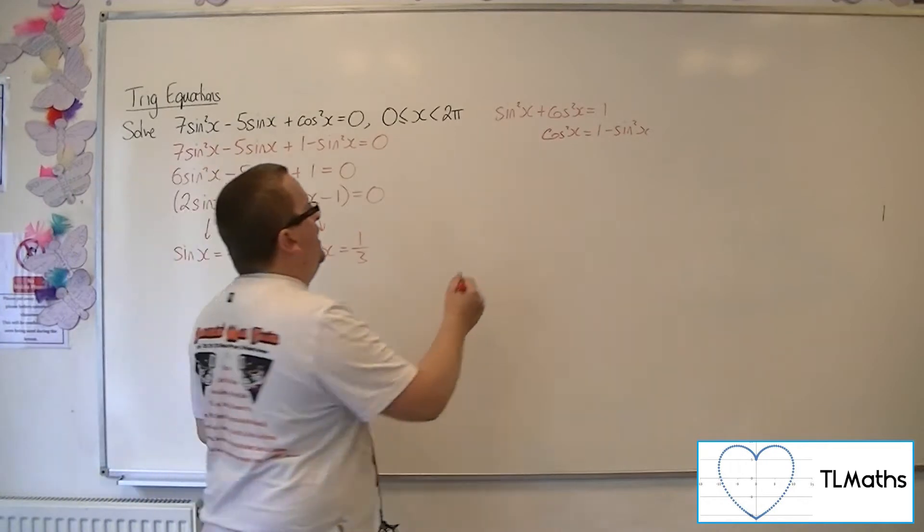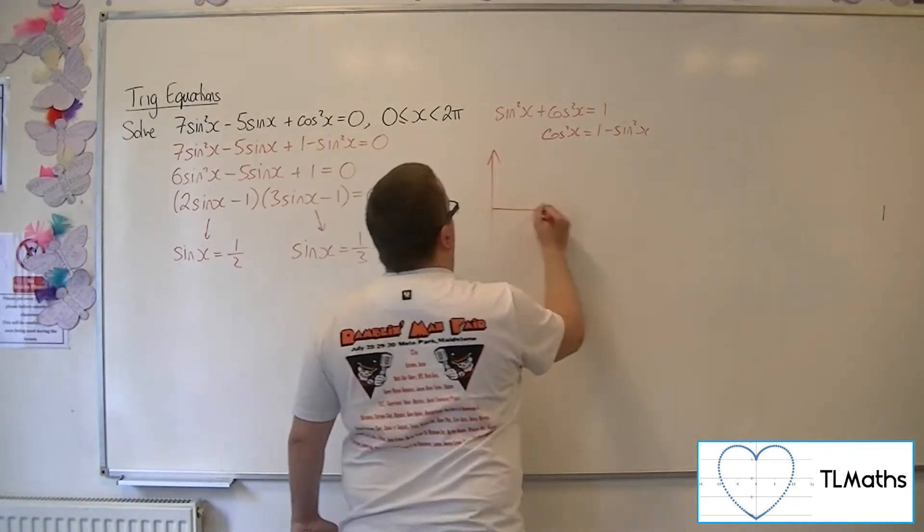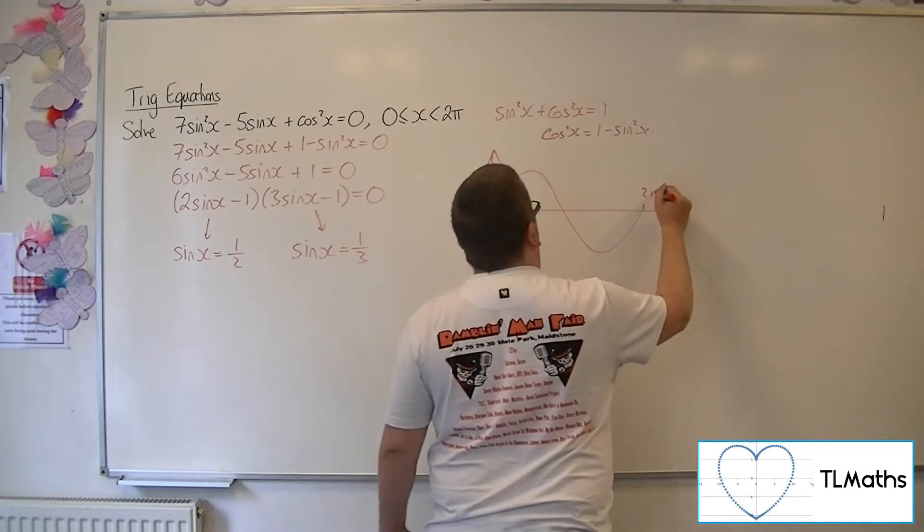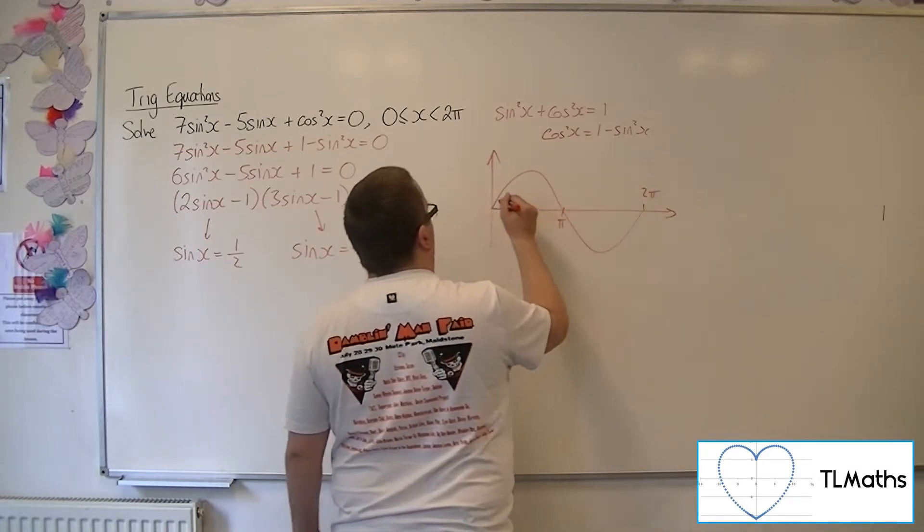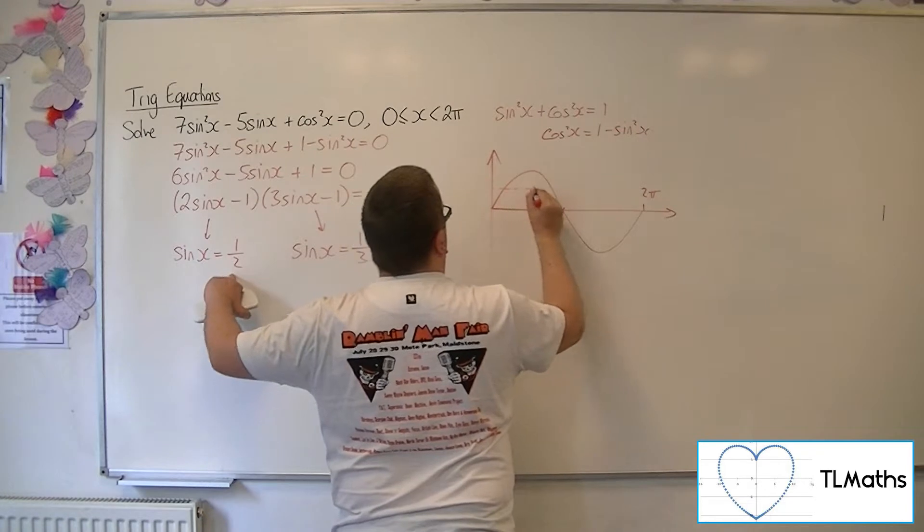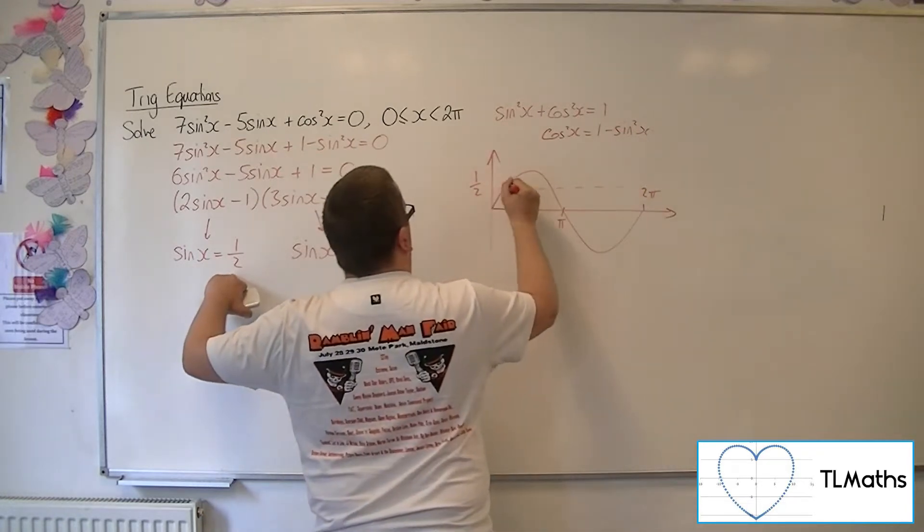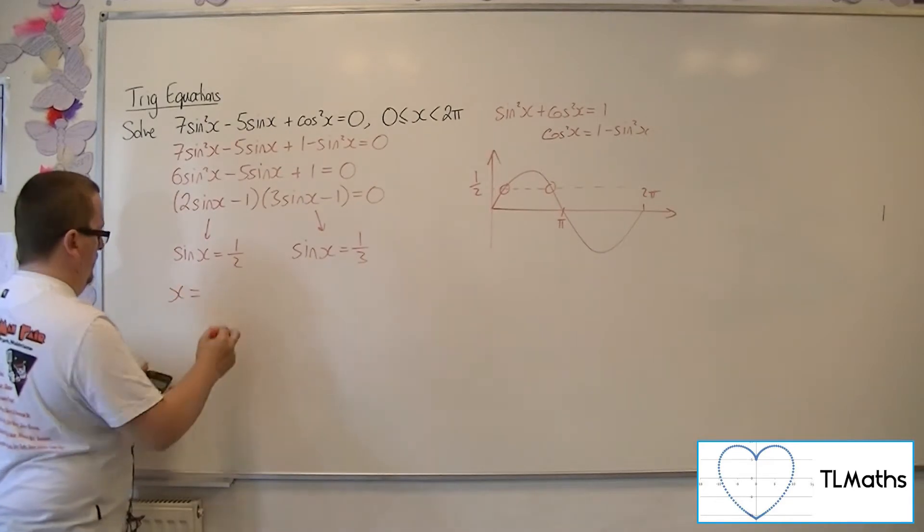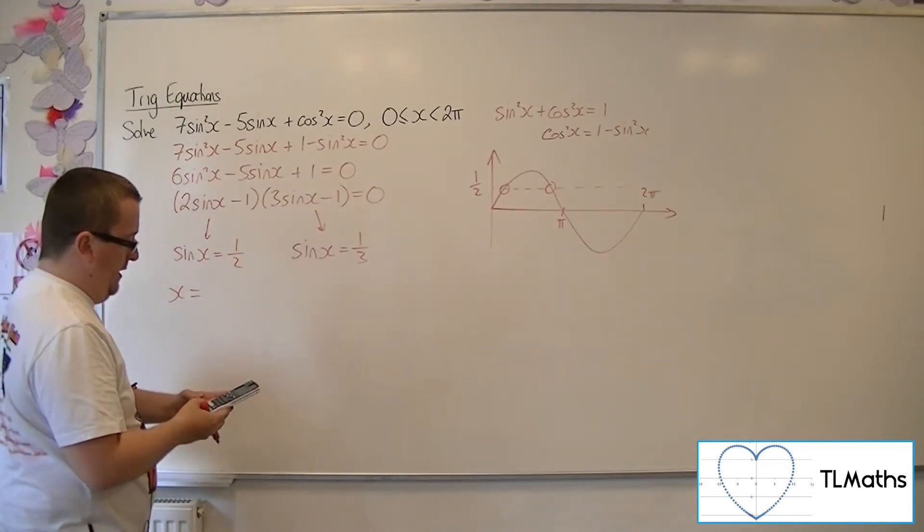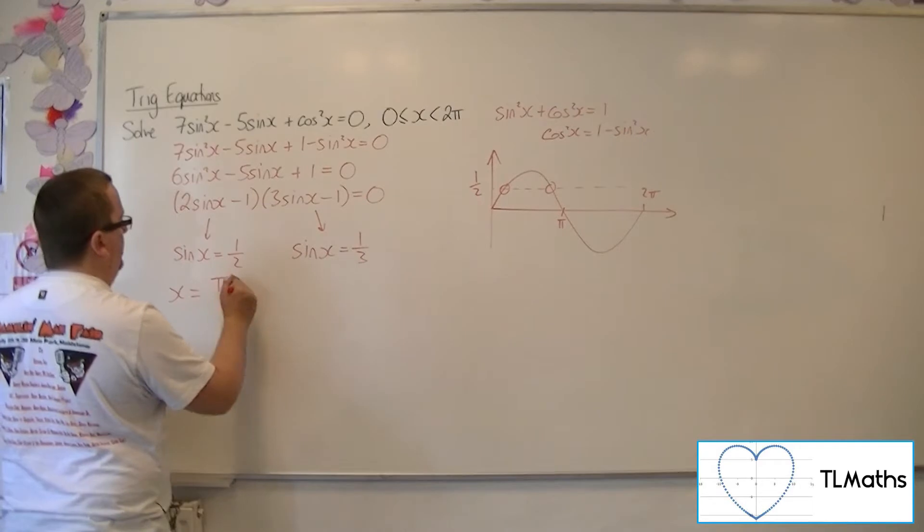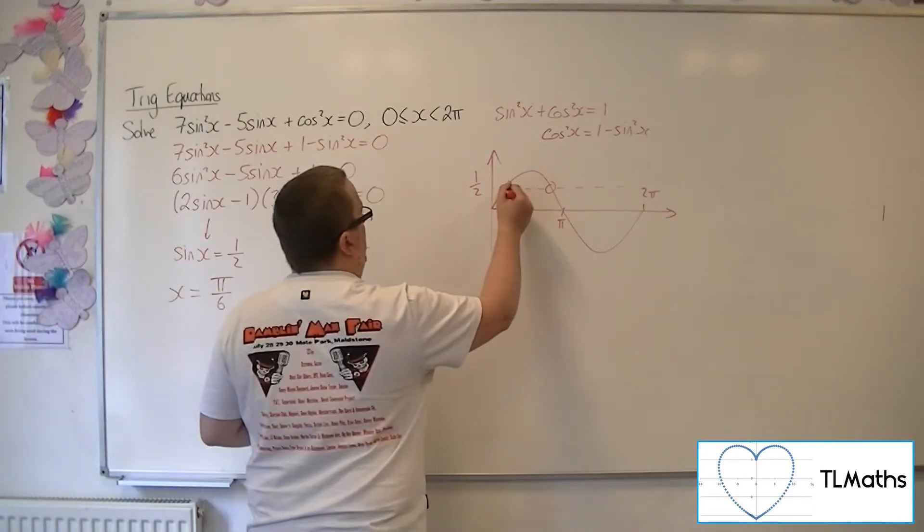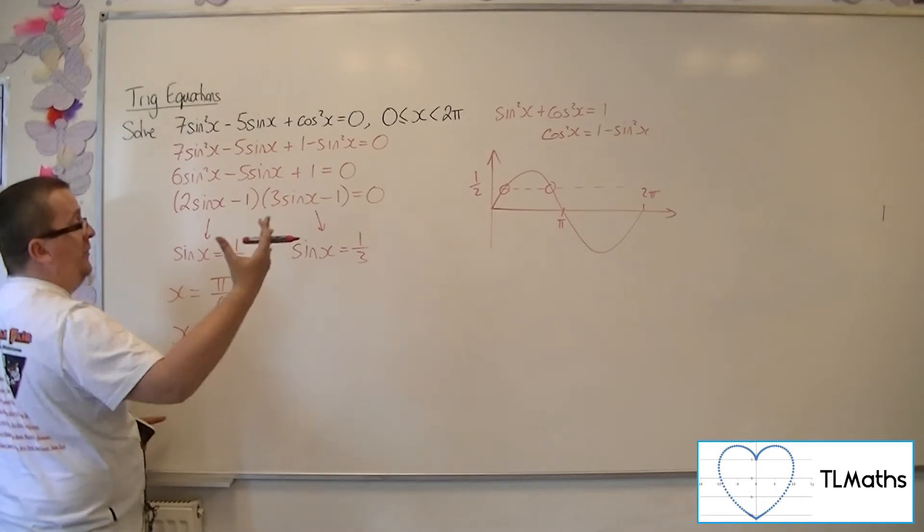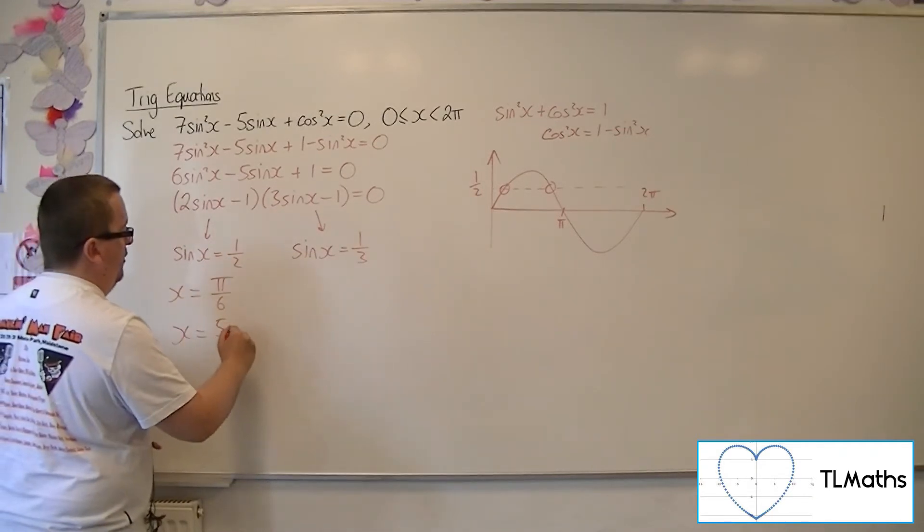So let's sketch sine between 0 and 2π. For the first one, sinx = 1/2, we'll be expecting two solutions. Inverse sine of 1/2 is π/6. The second solution is π/6 away from π, so 5π/6.